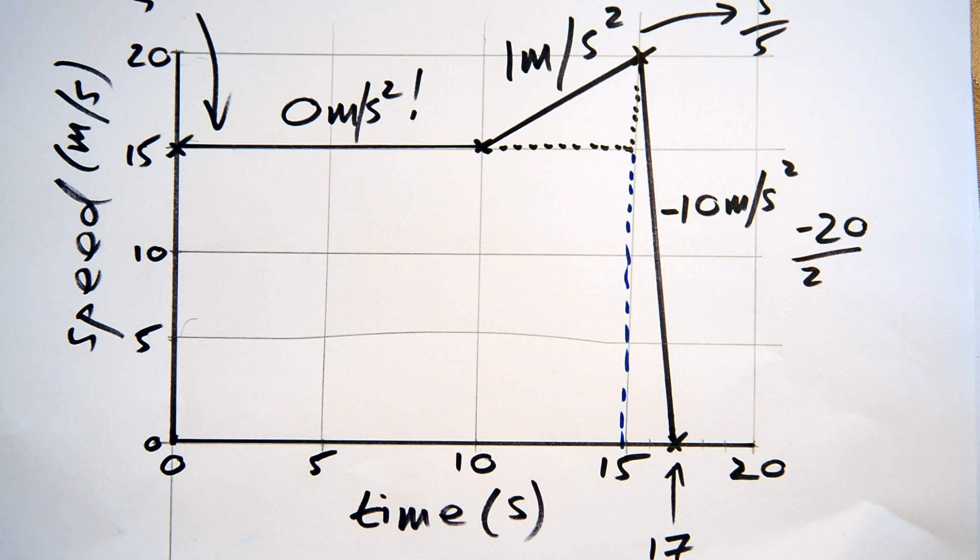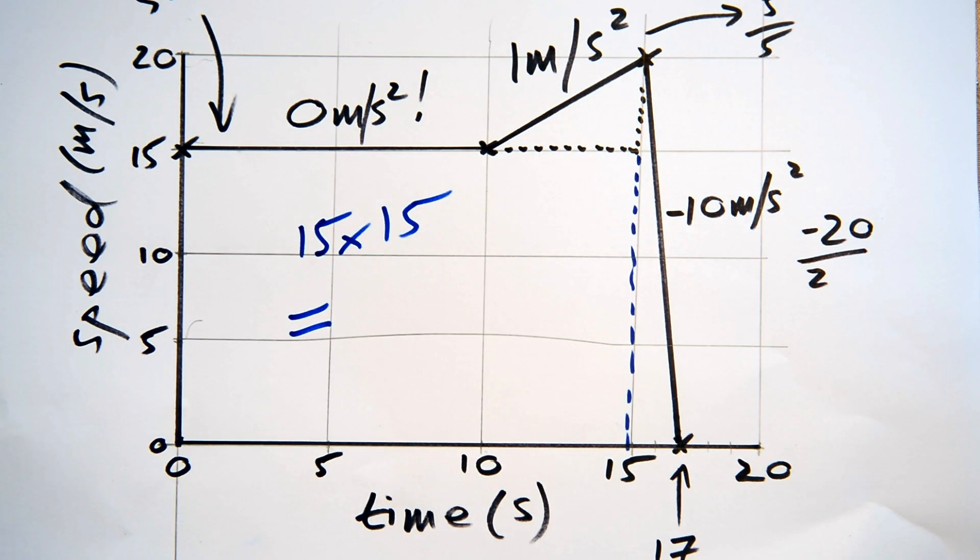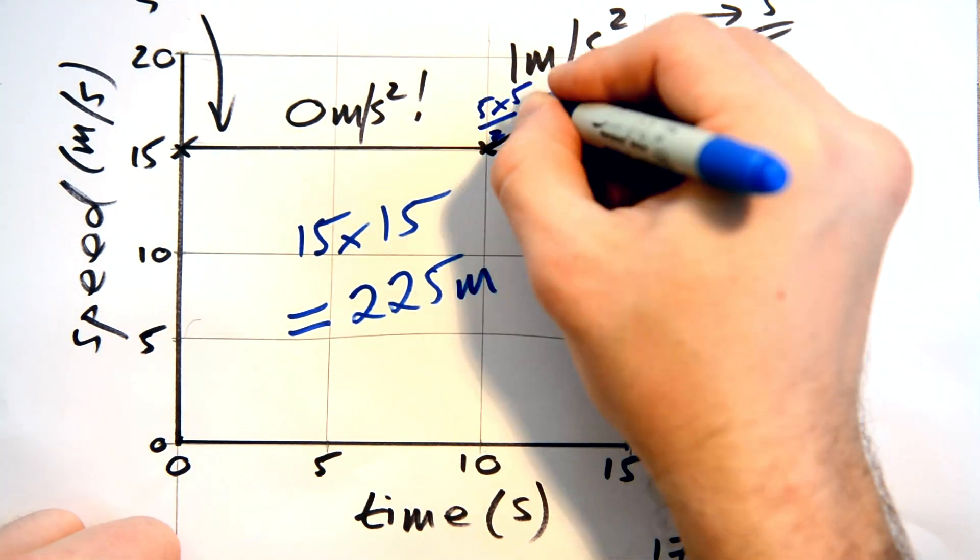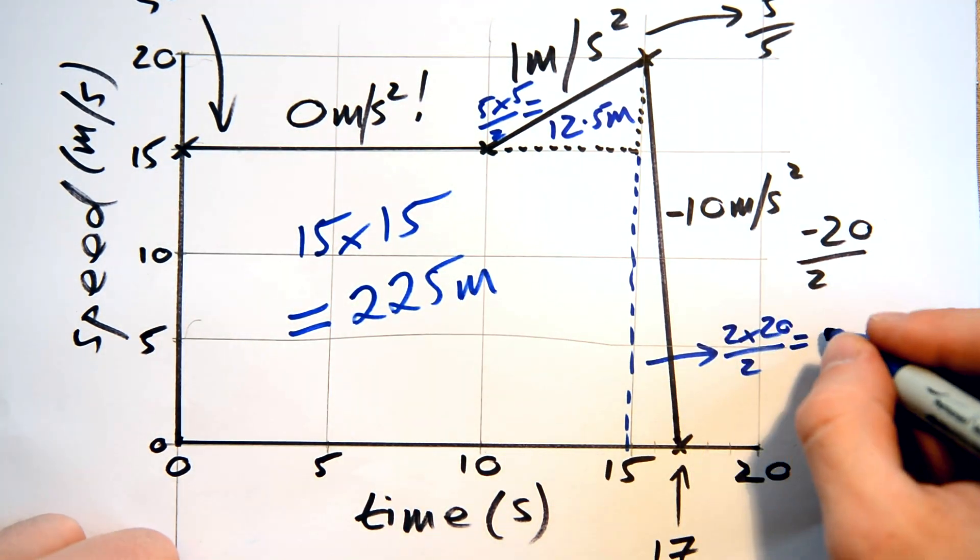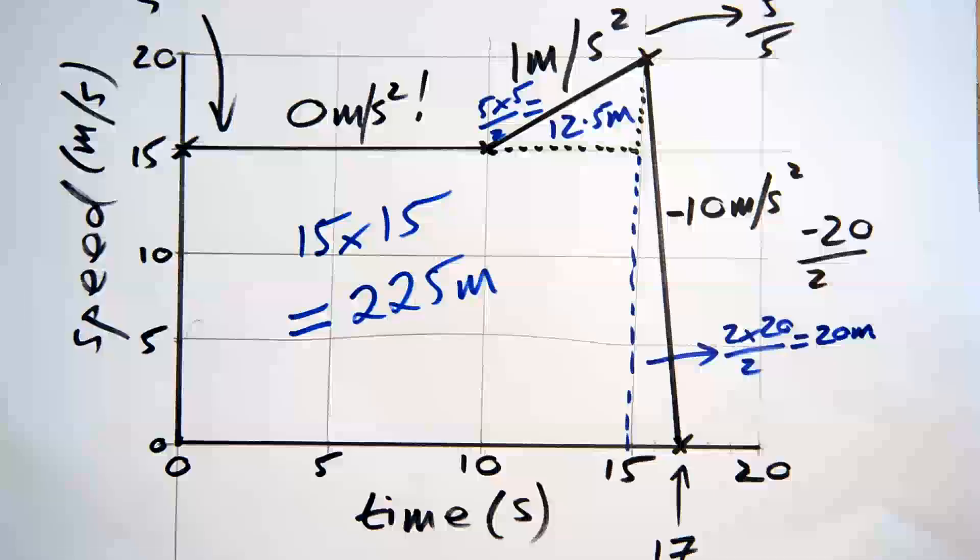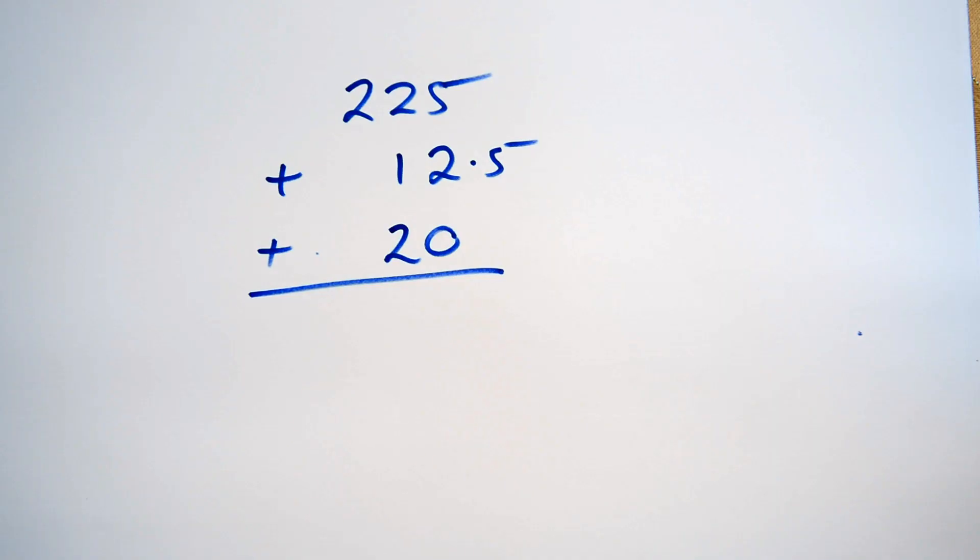Okay, all yours. Pause the video here, and calculate the distance he travelled. Let's see how he got on with that. So, here are all the areas for my triangles and rectangles. Add them all up, and we get this distance here. Well done if you got that right.